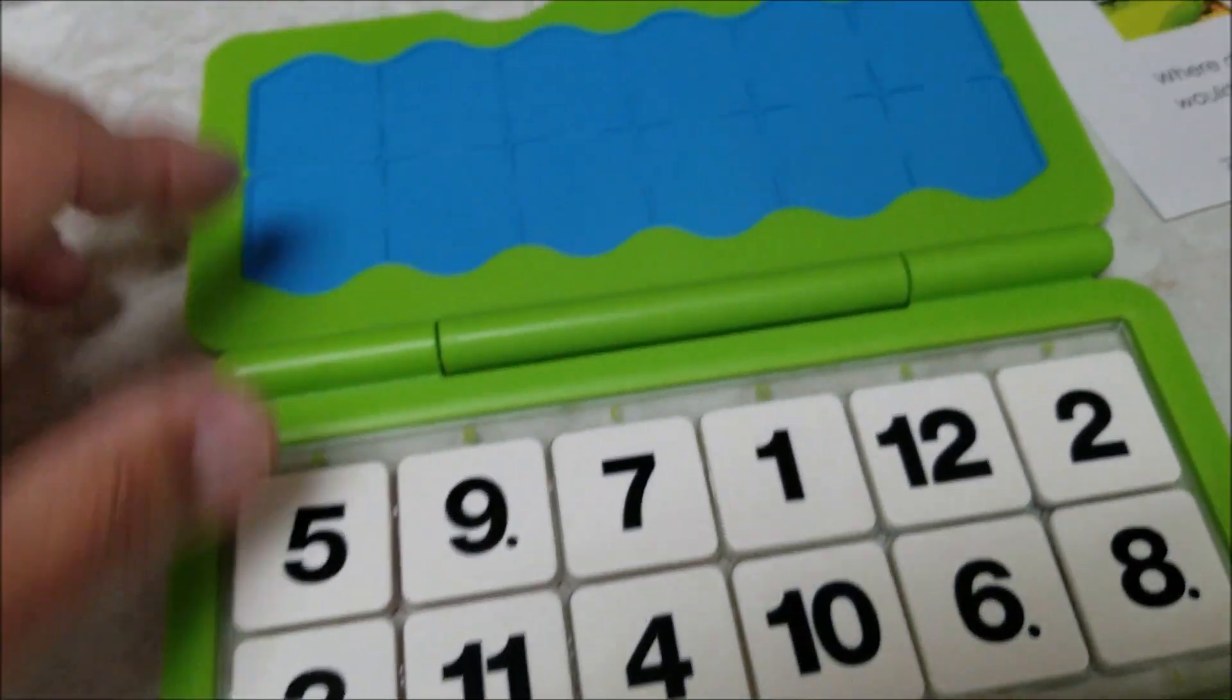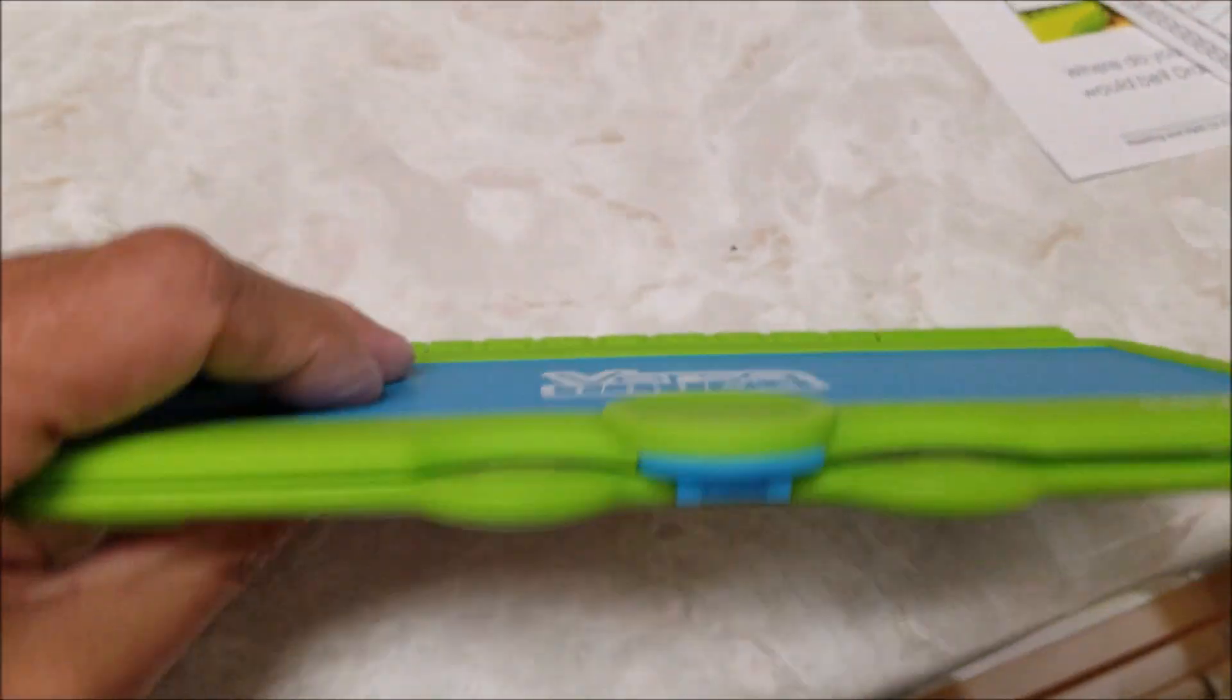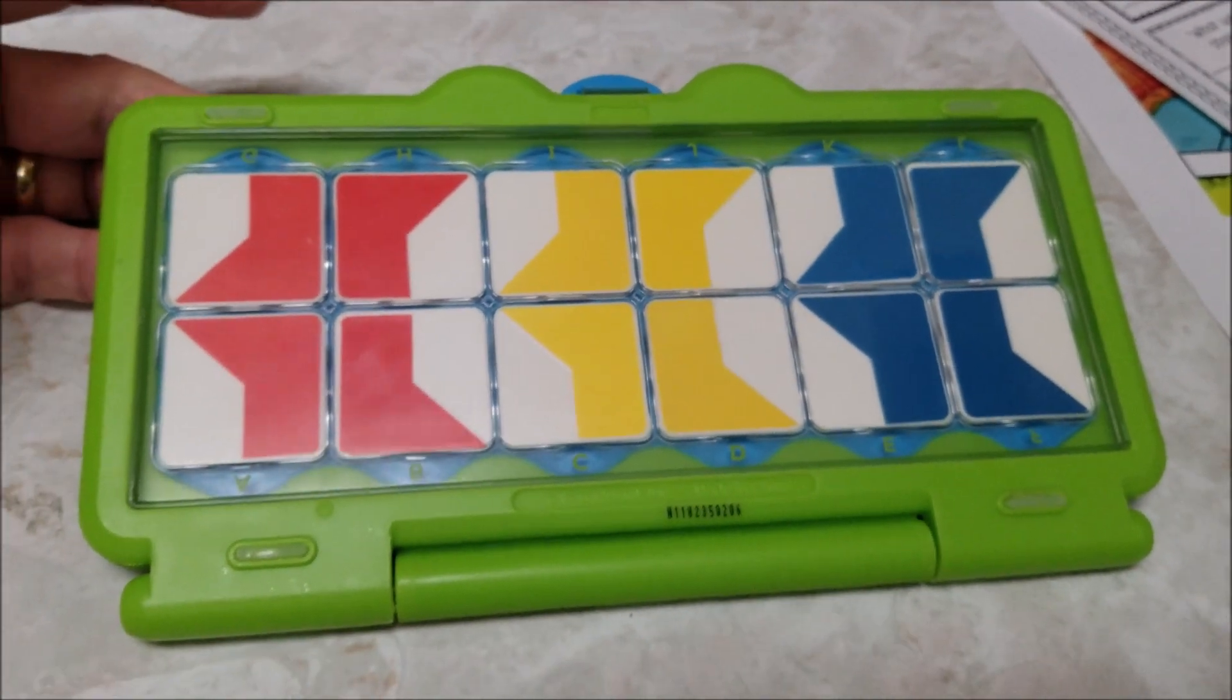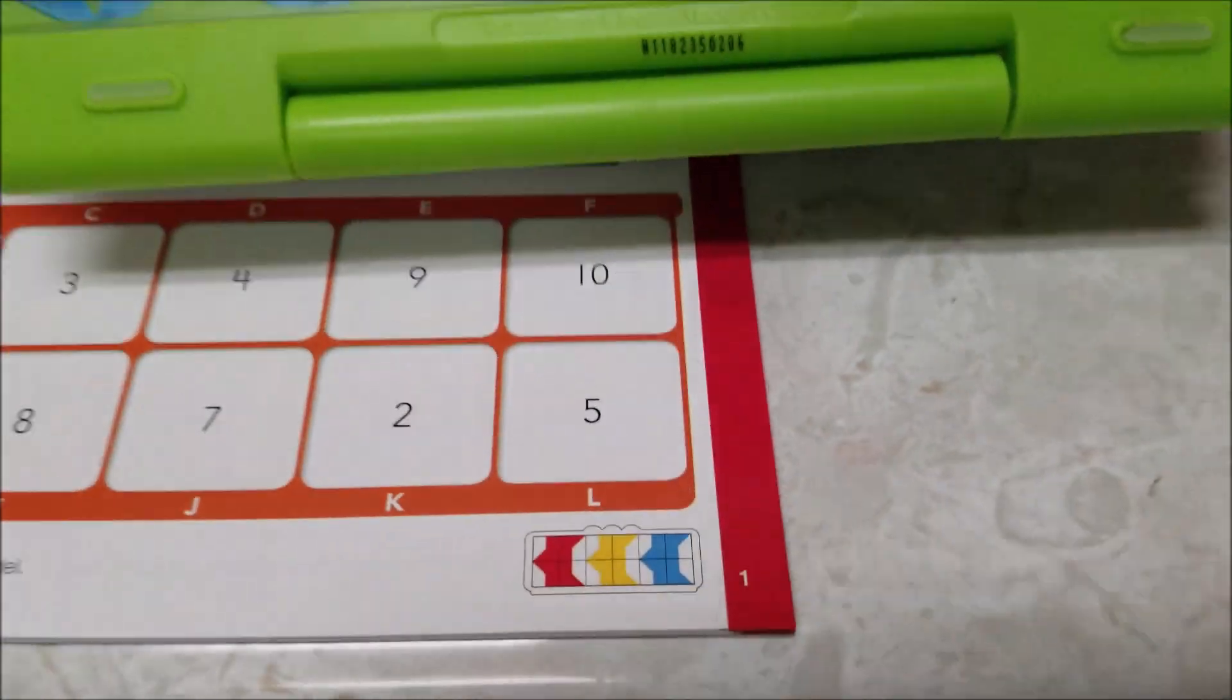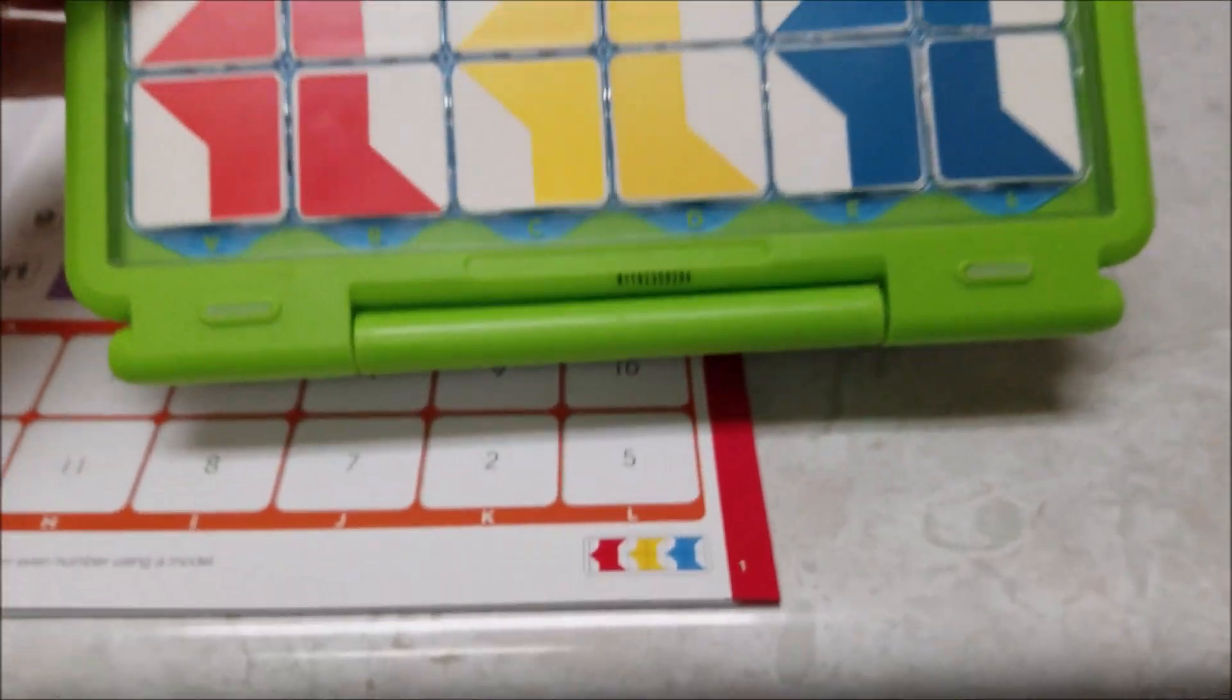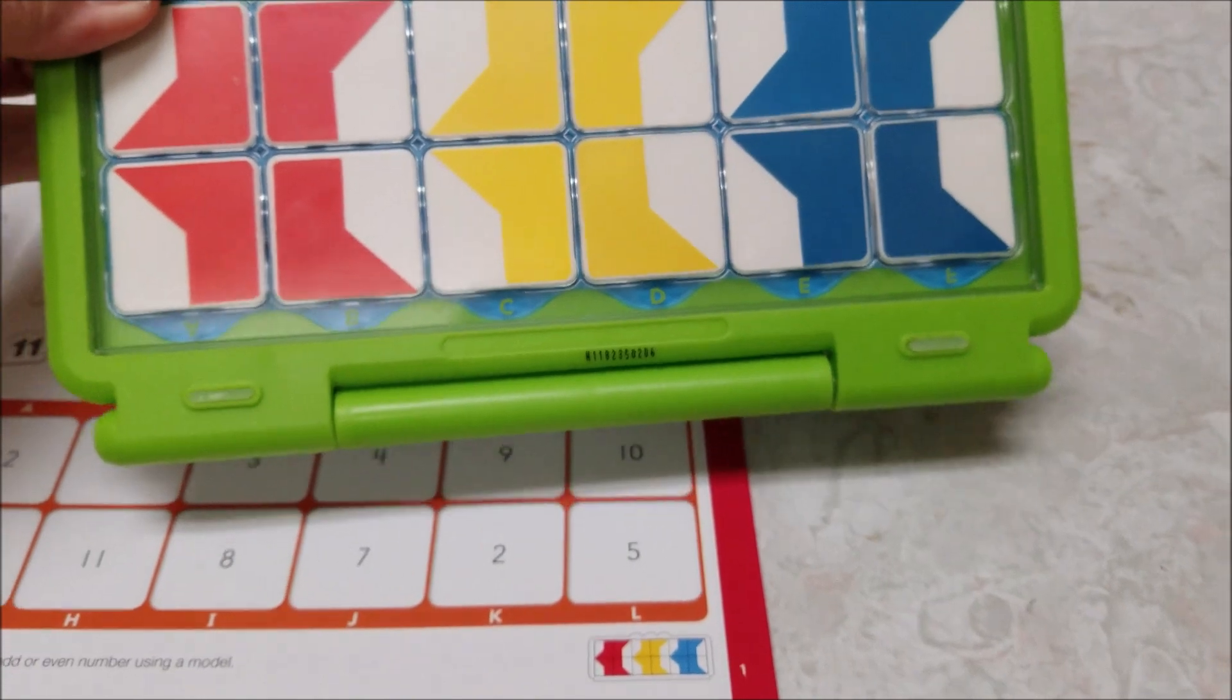And what we basically do is we close this, flip it over, and it should make the pattern that we want. And if we compare it, that's the pattern we're looking for. So that's how a student would be able to check their answer and go, yeah, I got everything right.